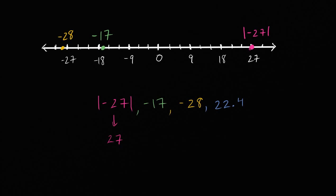And then finally we have 22.4. So let's see — we have 18, 21, 22 would be here. So 22.4 is going to be roughly right over there. That is 22.4.